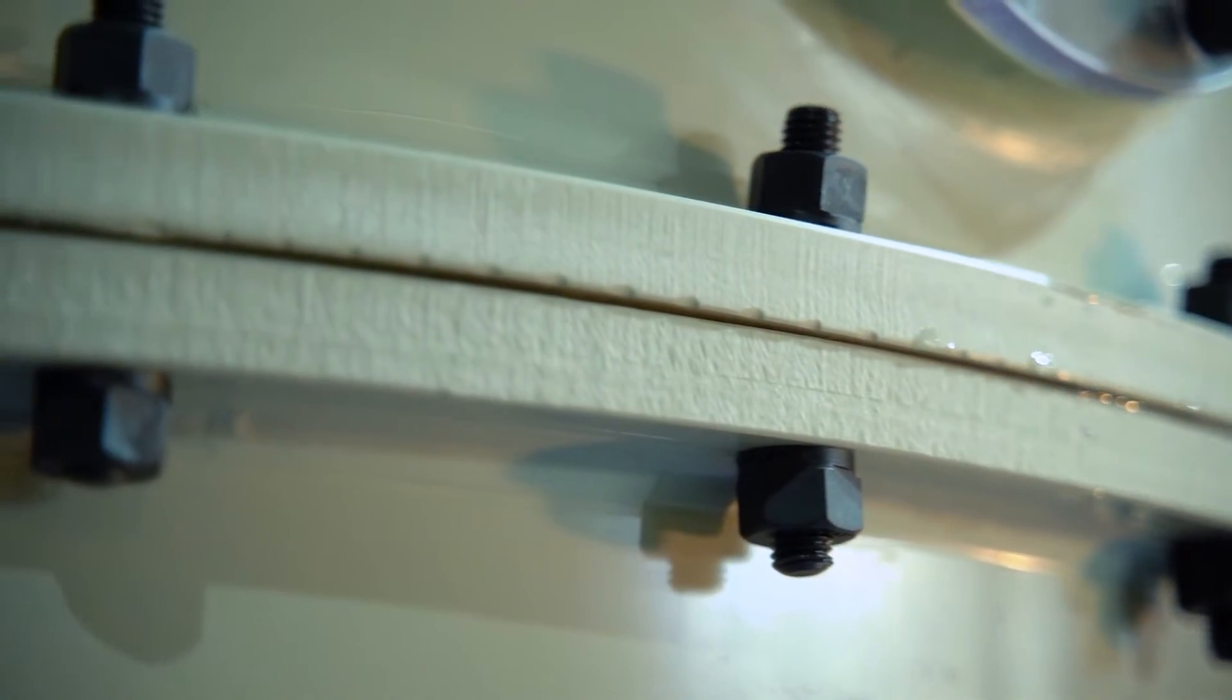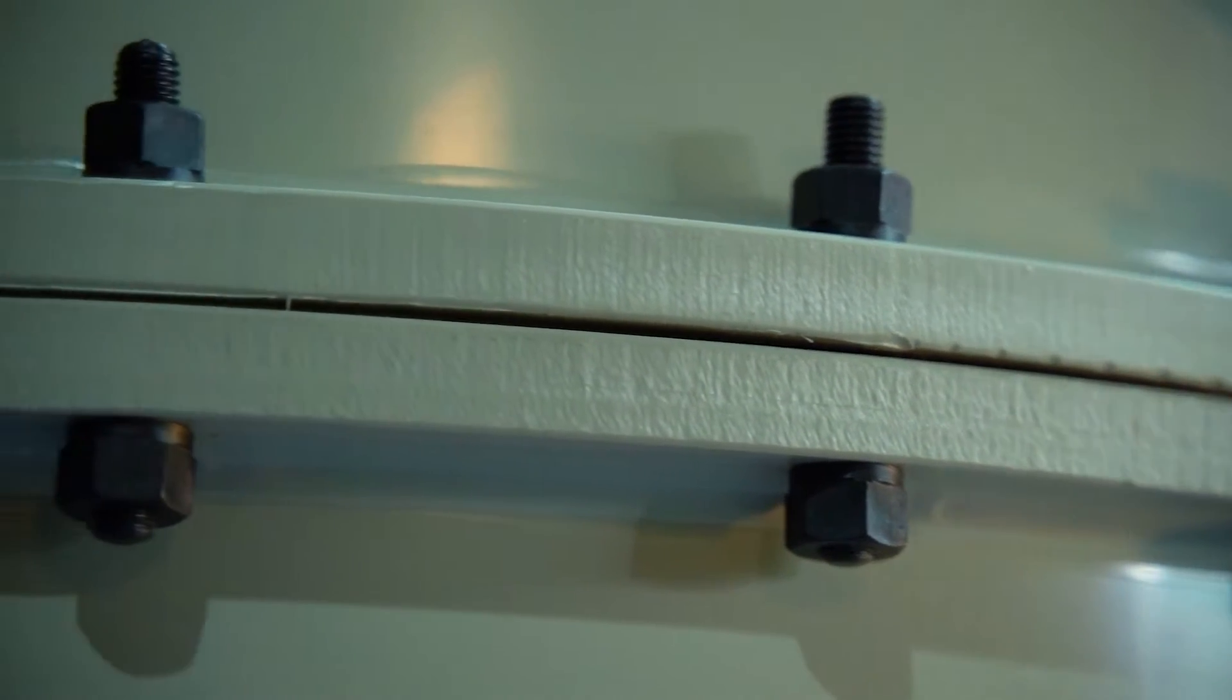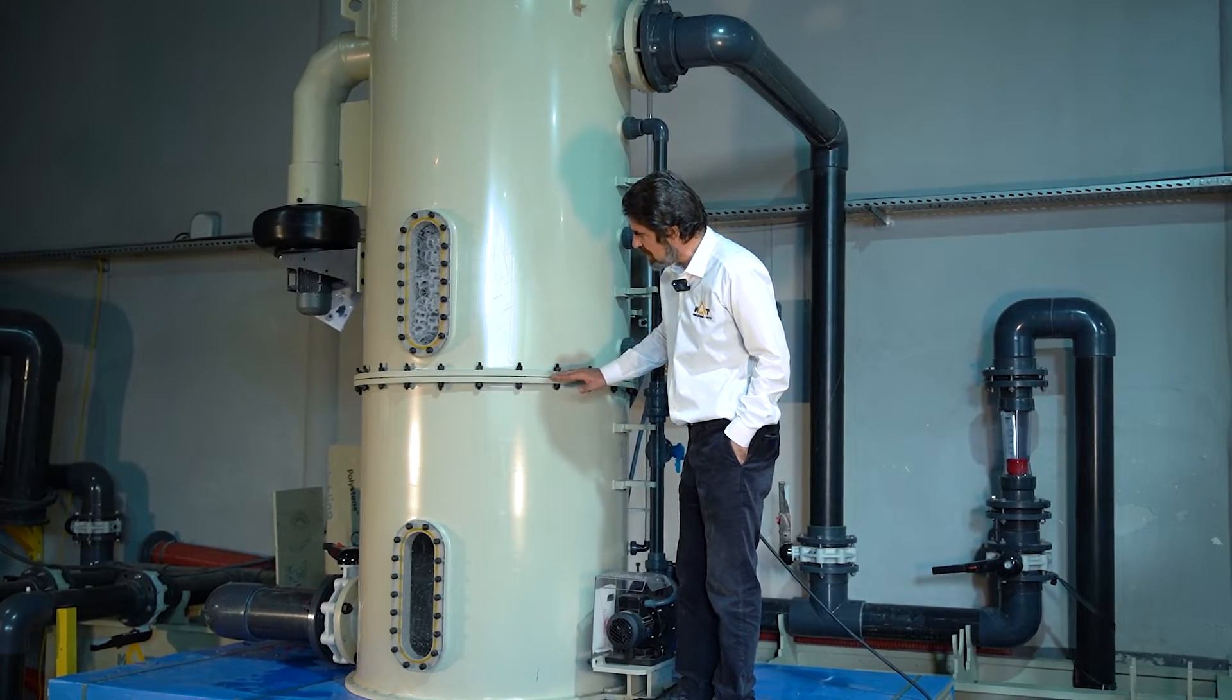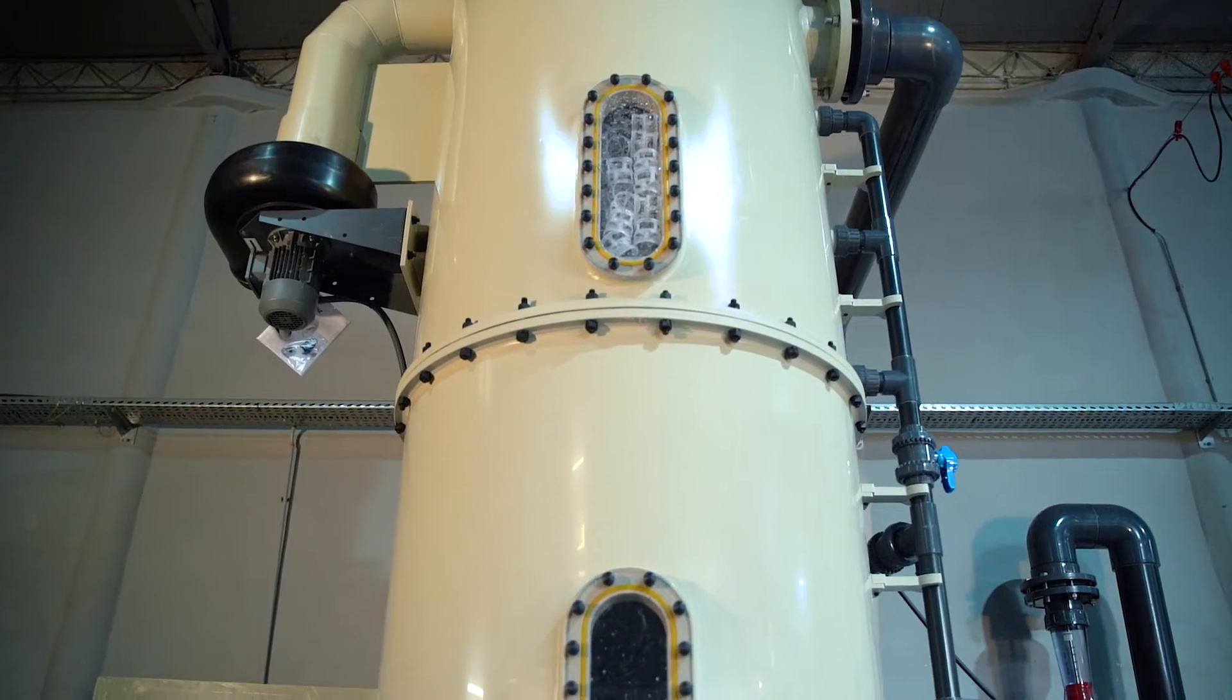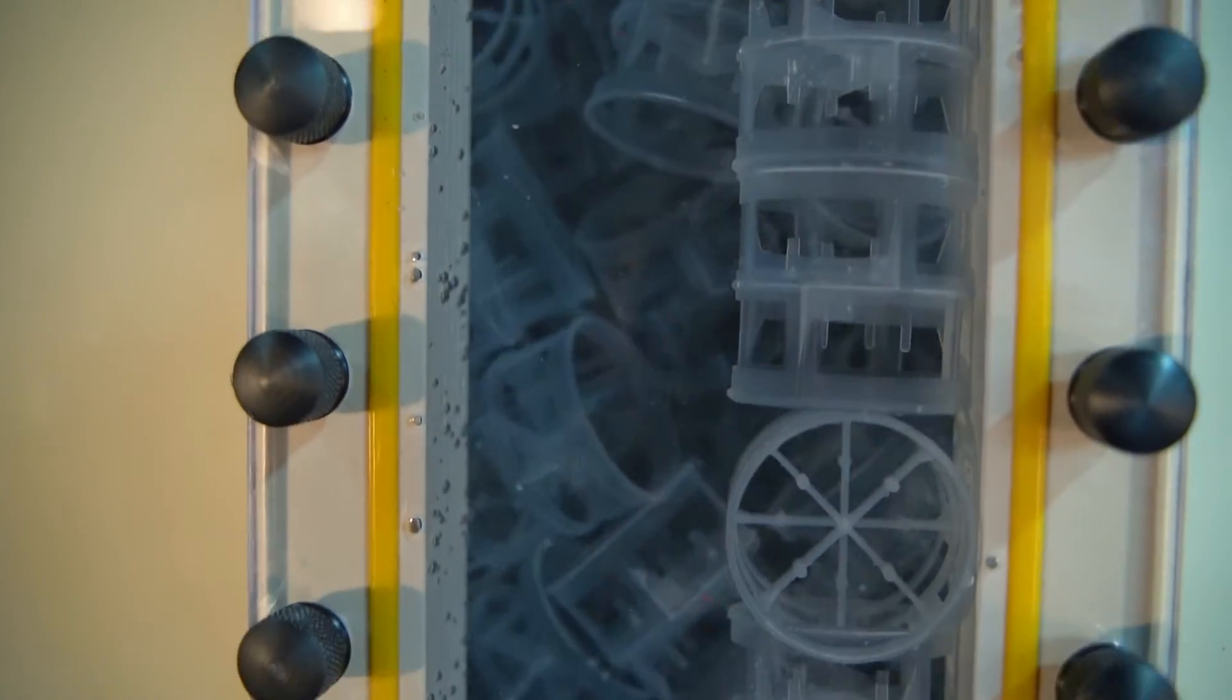For ease of service, we have a flange in the middle. This is a relatively small unit with two observation windows in front and one in the back to see how the water is dripping and stripping.